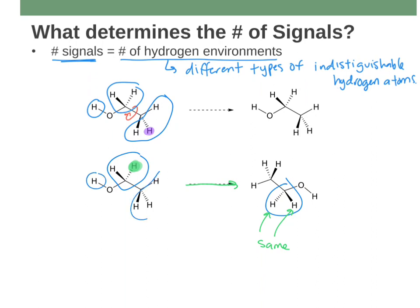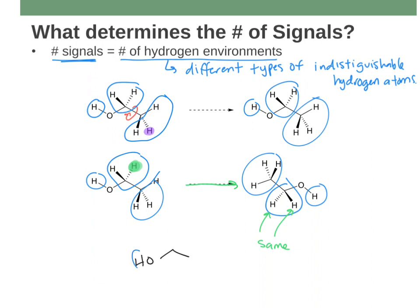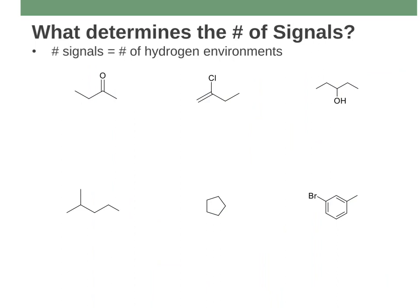All this to say: ethanol has three environments — or if I draw ethanol in its line-bond drawing, we'd say it has three environments. Three environments means that when you take an NMR of it, it should have three signals. We should expect to see three signals.